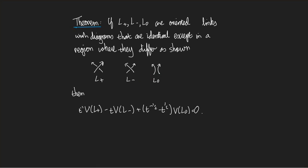Here's the statement of the theorem. Remember we've been using this quite a bit: if L+, L-, and L0 are oriented links which have diagrams that are identical except in the region where they differ as shown — L+ has a positive crossing, L- has a negative crossing, L0 has no crossing at all, smoothed out in the way compatible with the orientations — then the skein relation holds.